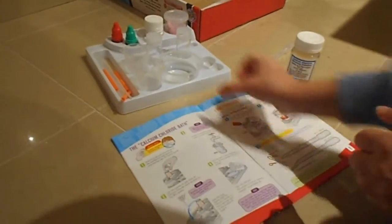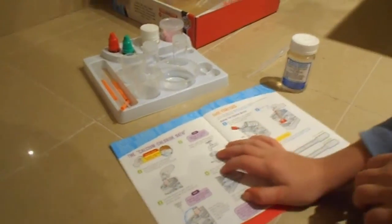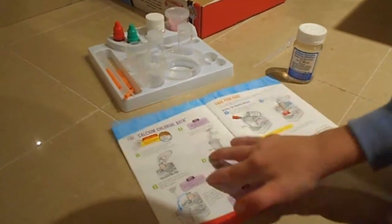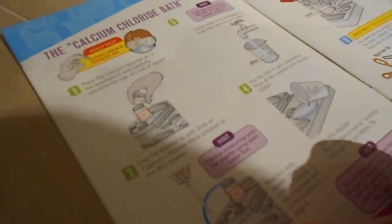But we've already done the first step of making the mixture. Well, there's two mixtures, so we've already made this one which is you have to get three milliliters of the calcium chloride into the beaker.